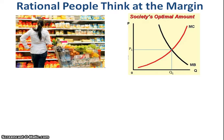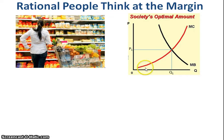When we're looking at rational people thinking at the margin, a great example is someone buying groceries — they're constantly making decisions about what they're going to buy with the money they have. They're weighing the marginal benefit — the additional benefit from purchasing one more item — versus the additional cost. We're talking about small incremental adjustments to an existing plan of action, looking at each item and the additional benefit it provides.